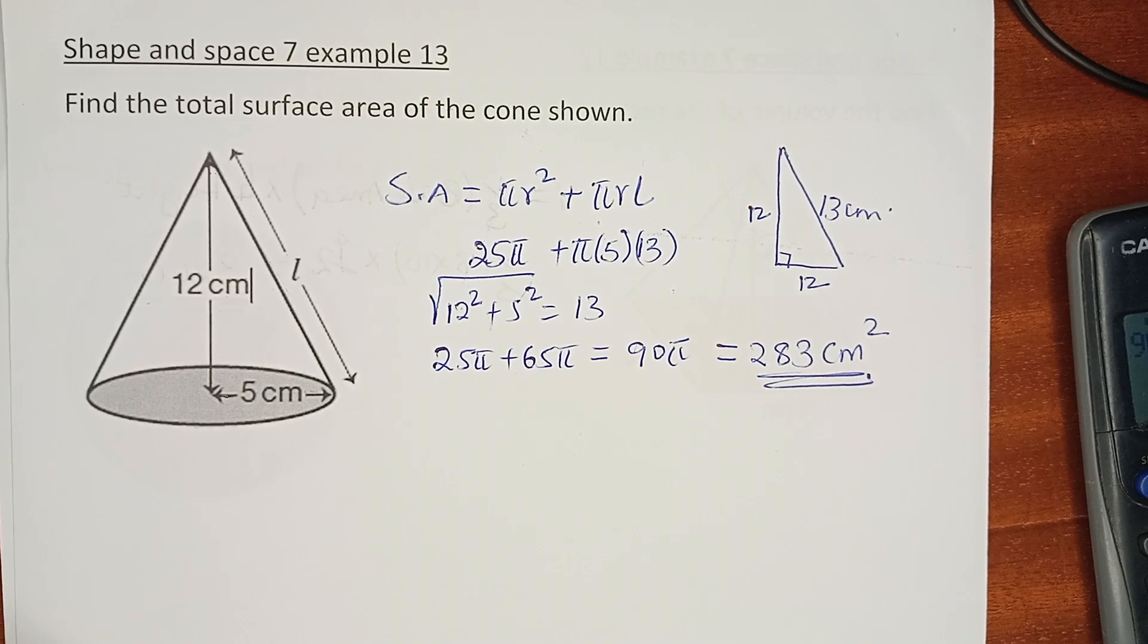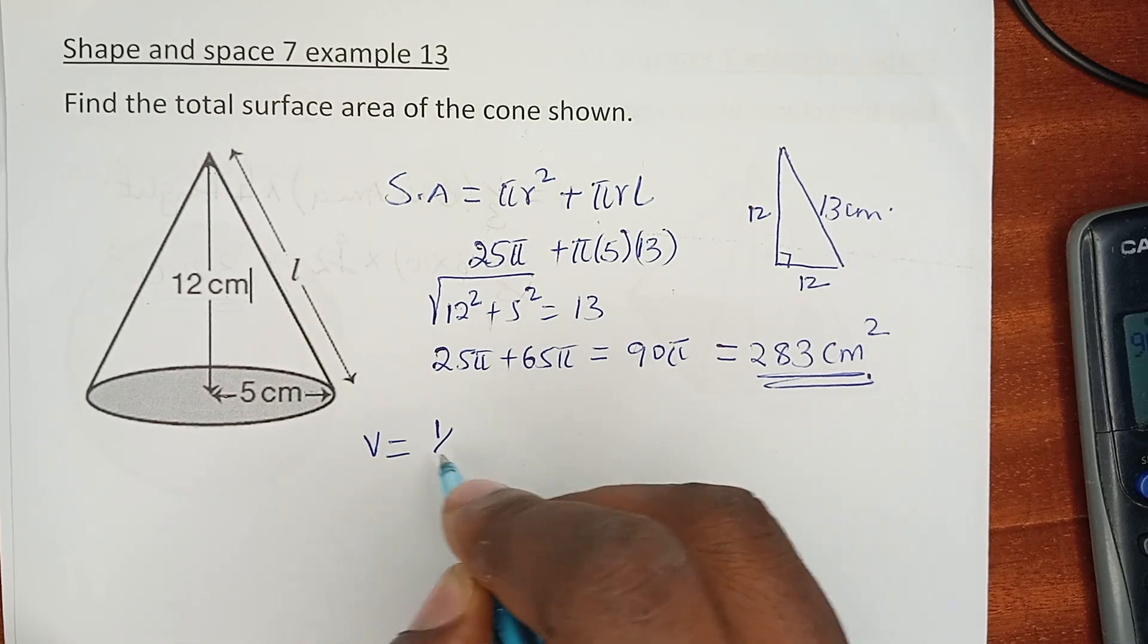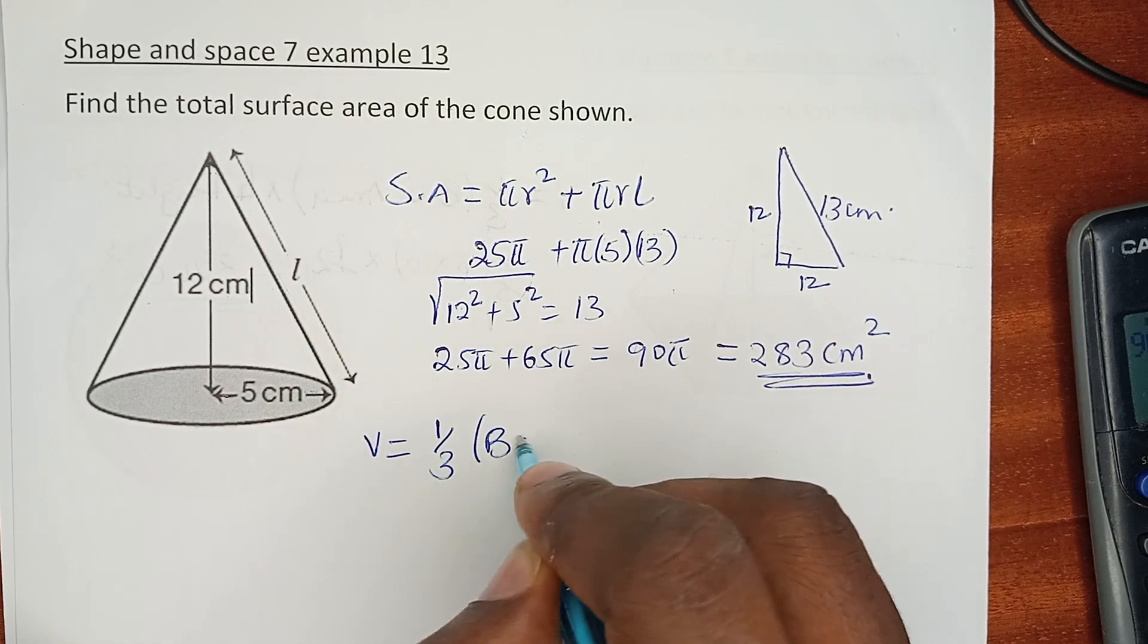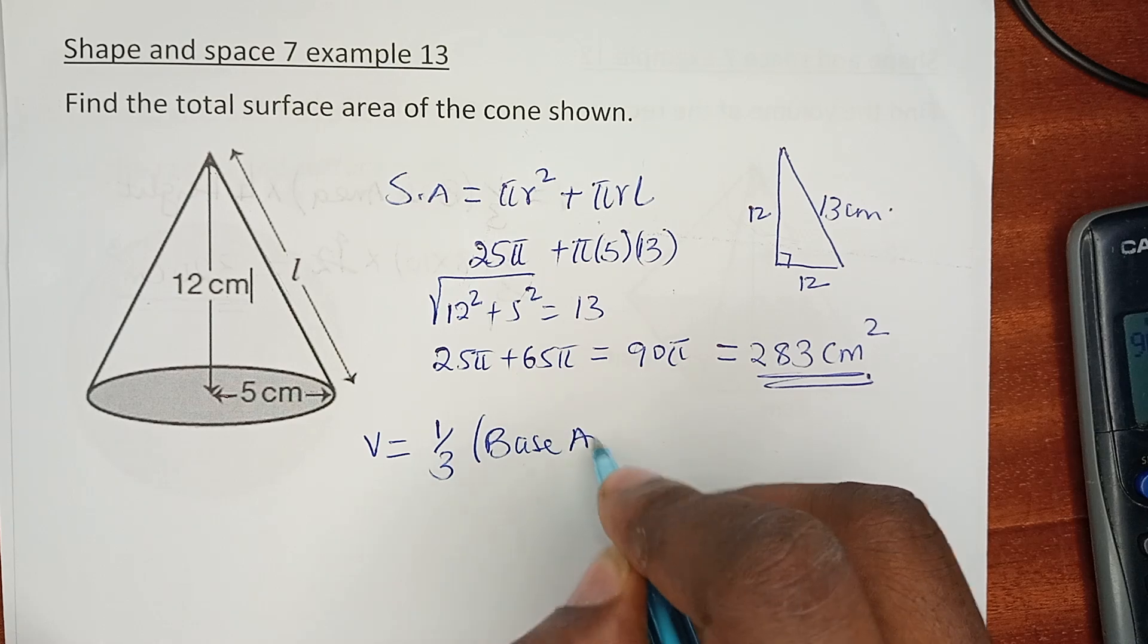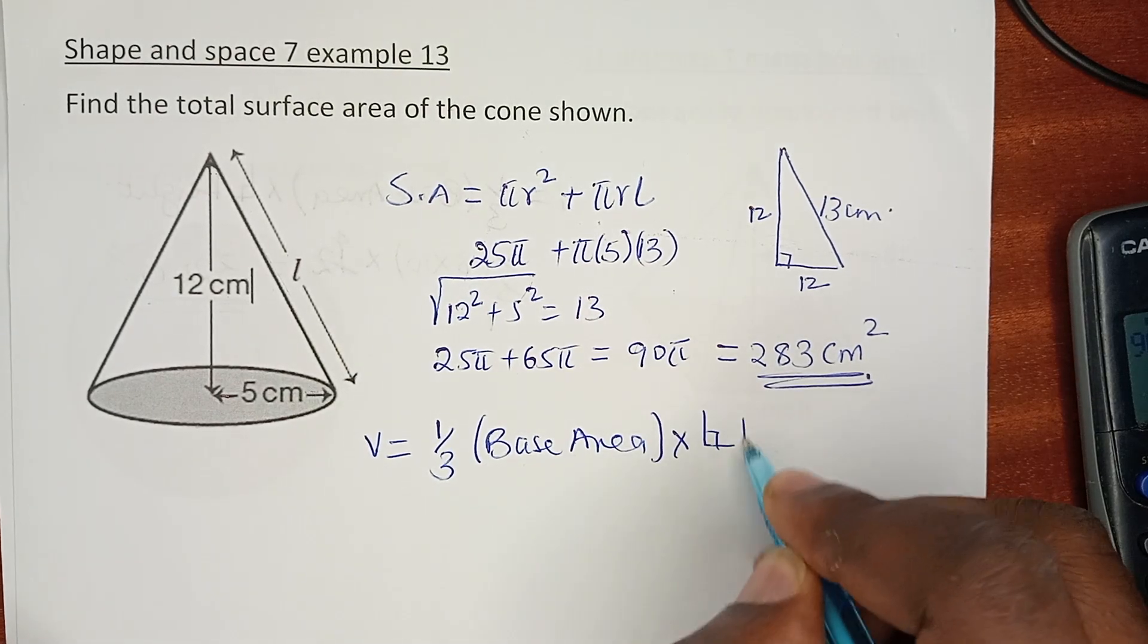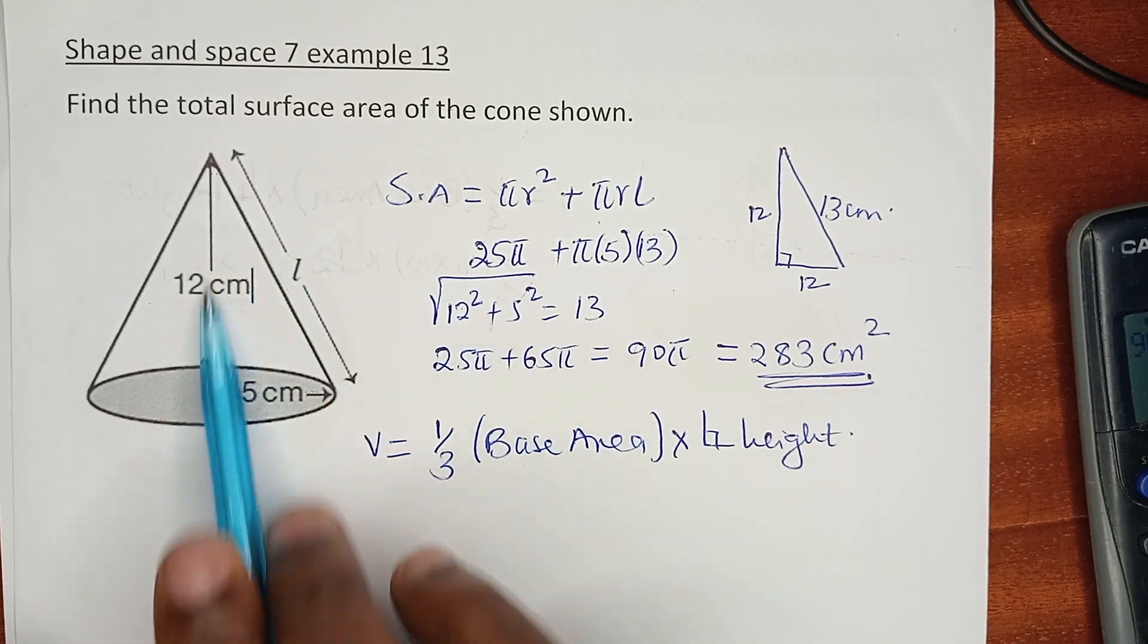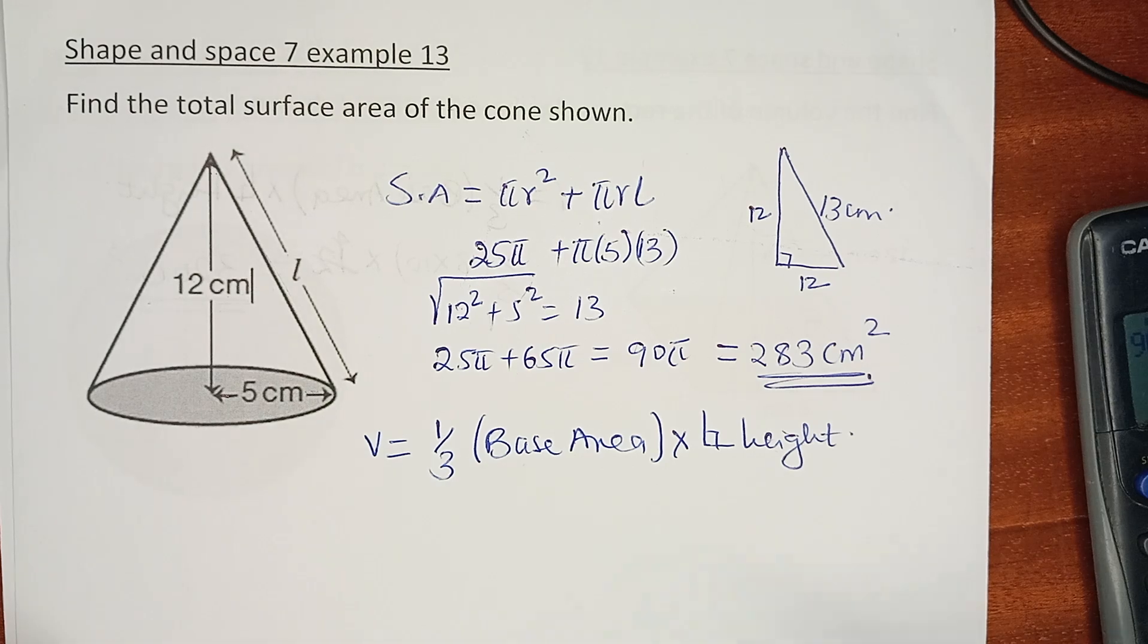I may want to calculate the volume as well. The volume is easy—the volume is given by 1/3 times the base area multiplied by the perpendicular height. You can already see that we have the perpendicular side as height as 12.